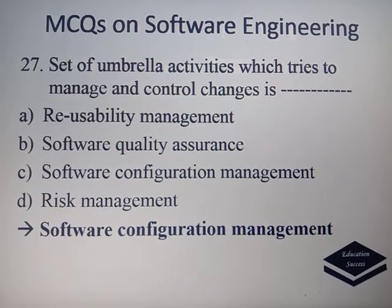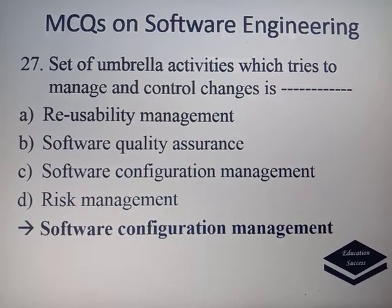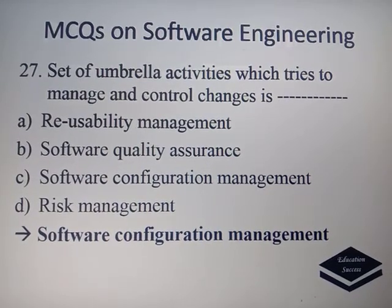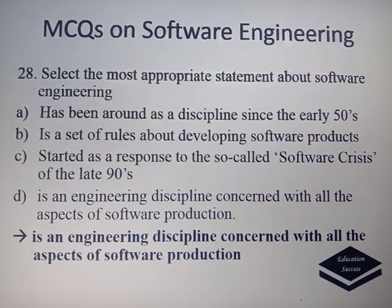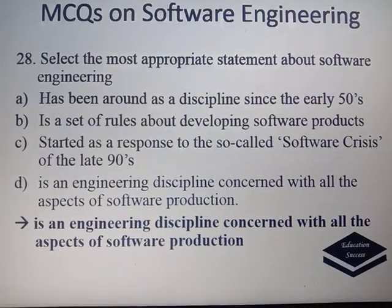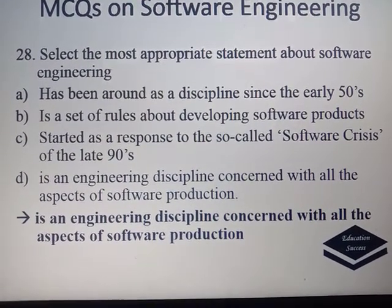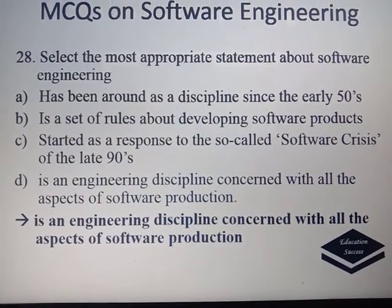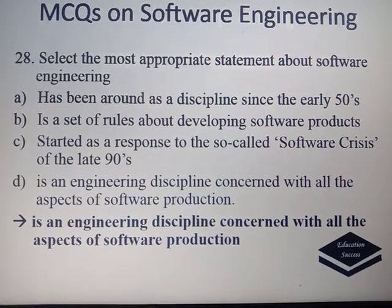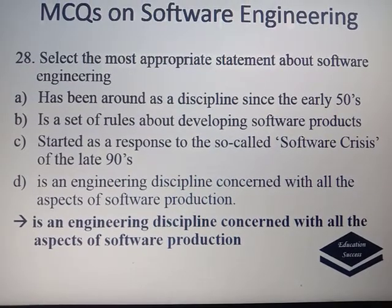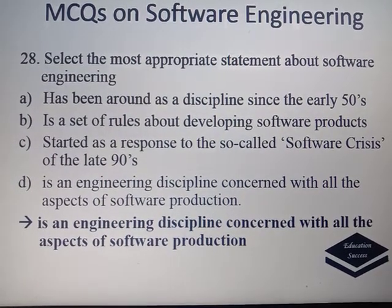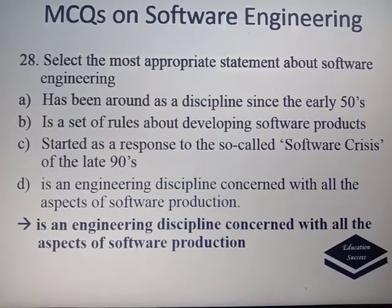The set of Umbrella activities which tries to manage and control change is Software Configuration Management, so the correct option is C. The most appropriate statement about software engineering is Option D: Software Engineering is an engineering discipline concerned with all aspects of software production.